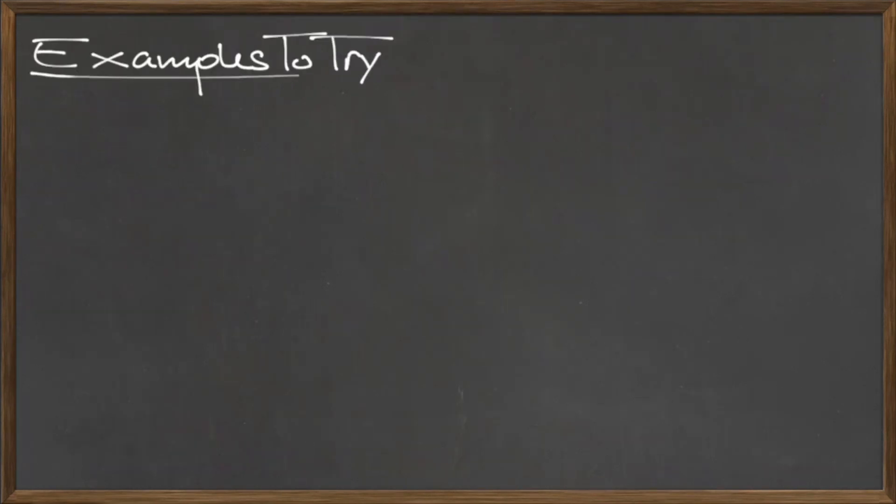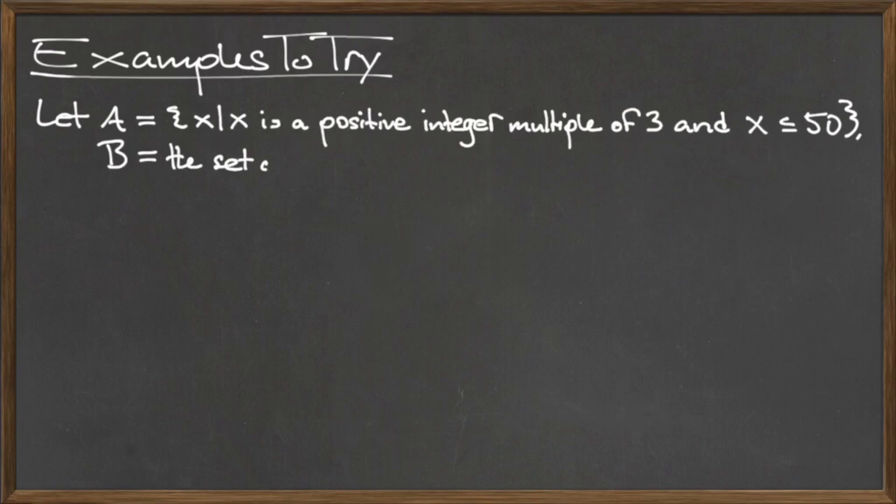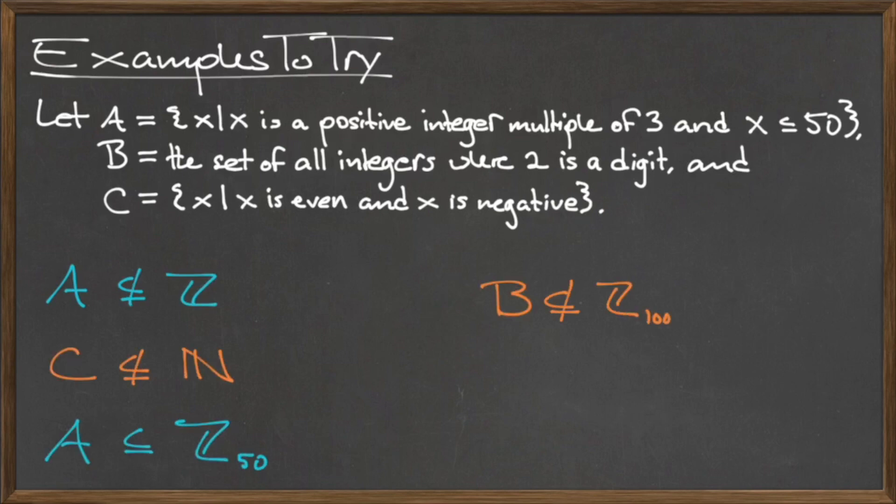Here are some examples for you to try on your own. Define the set A to be the set containing all elements x, such that x is a positive integer multiple of 3, and x is less than or equal to 50.